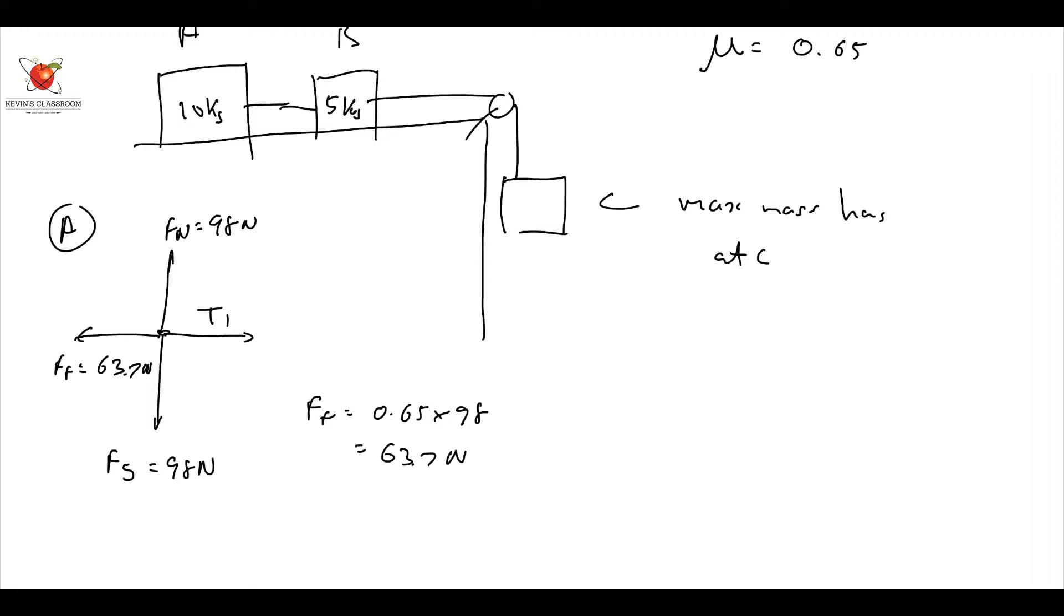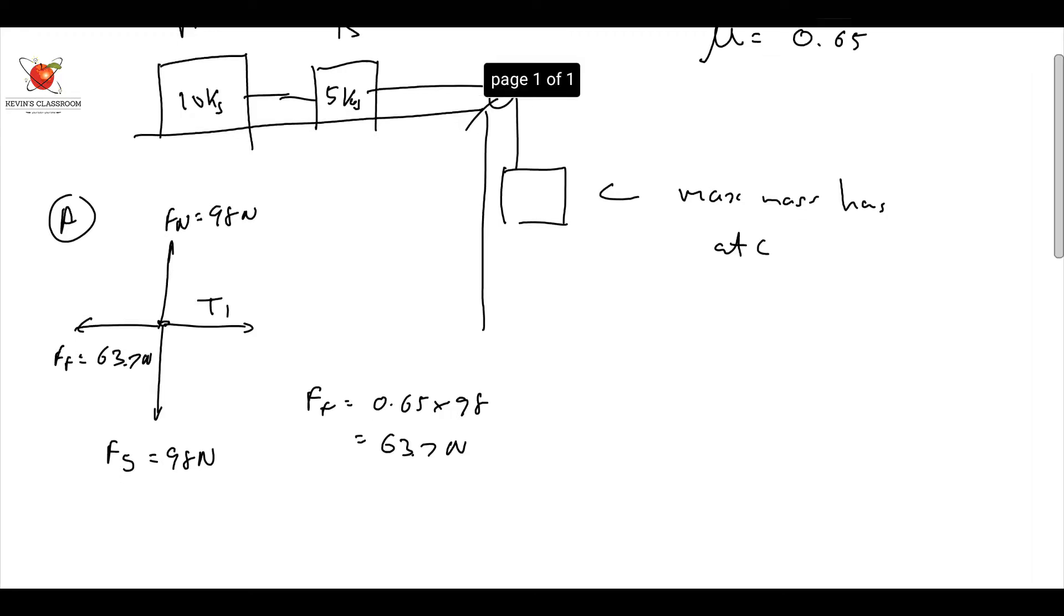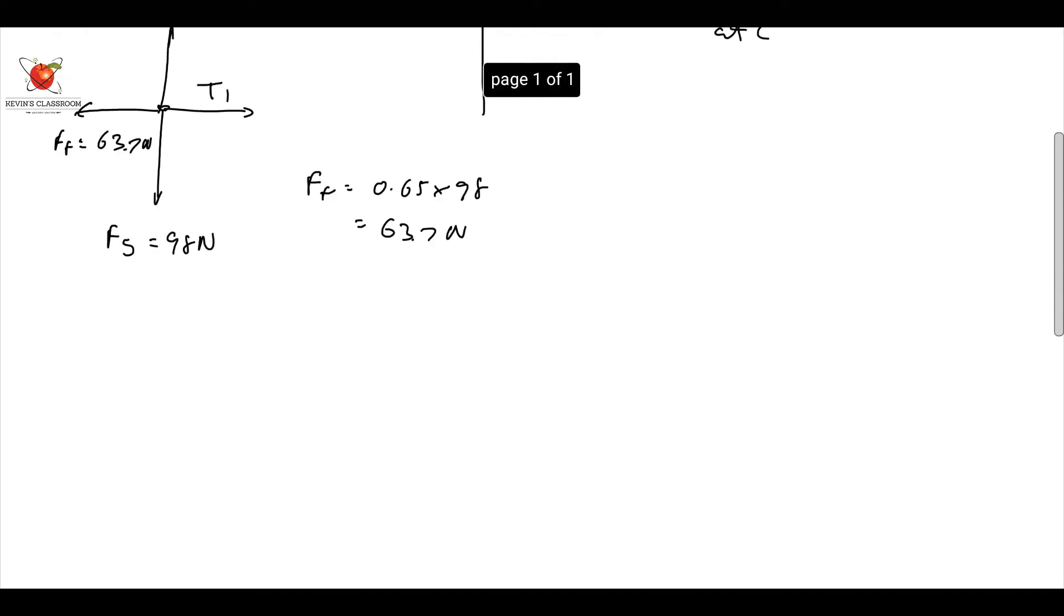obviously, I could do the same thing for item B, so let's just, don't do it there, because that's not the spot. Let's move it up. Let's do for B, okay, for B,